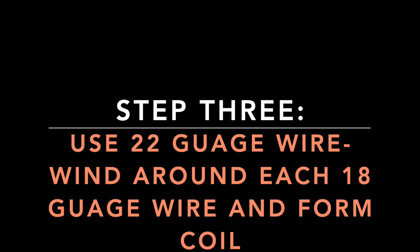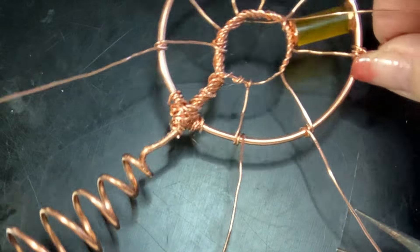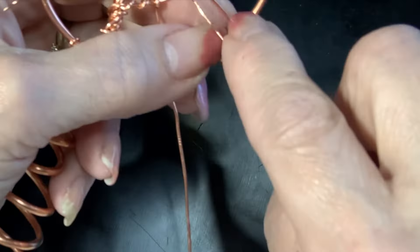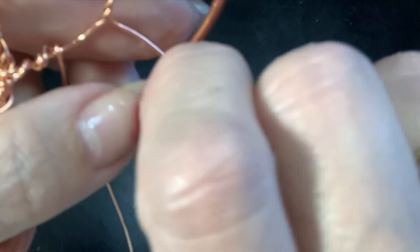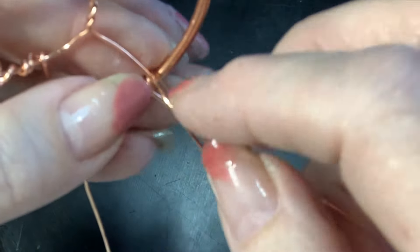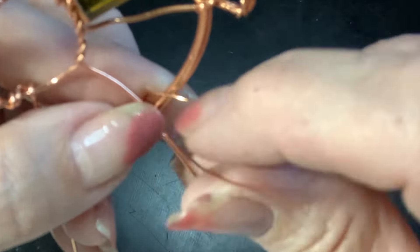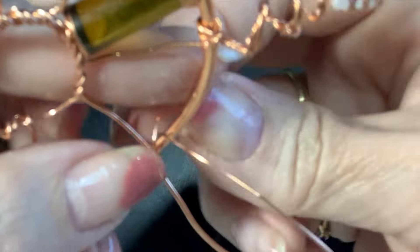Use the 22 gauge wire and wind around each 18 gauge wire and form a coil. Now at the end of each of these coils that I'm going to be forming, I'm going to then attach one of my quartz crystals.